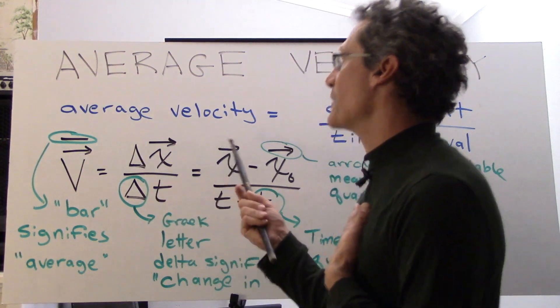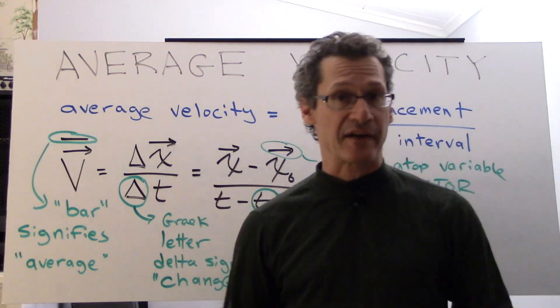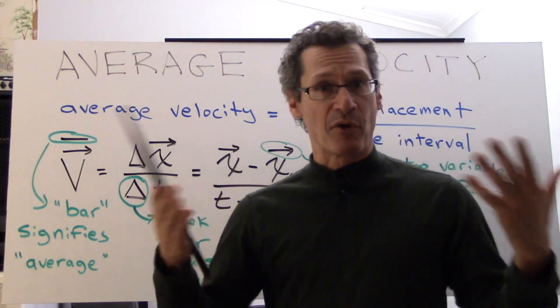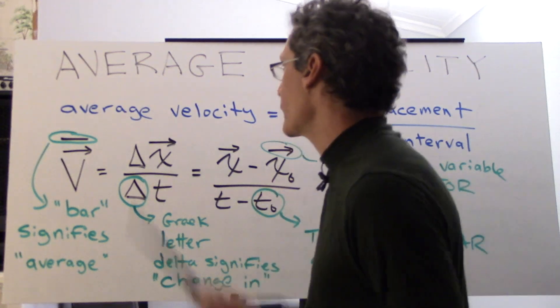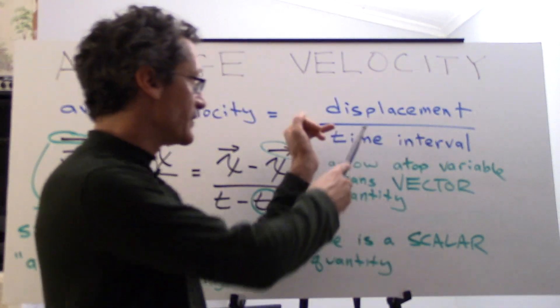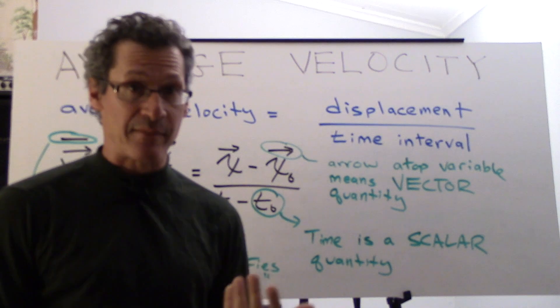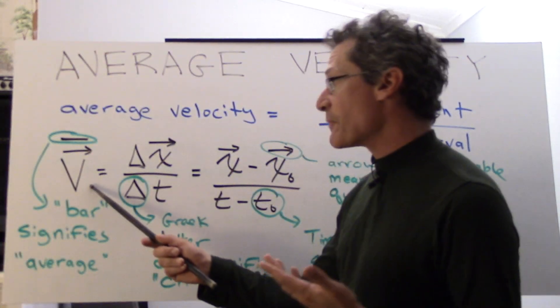But I want to really speak about average velocity in that it's the vector form of speed. It has both magnitude and direction. So average velocity is the displacement over the time interval.